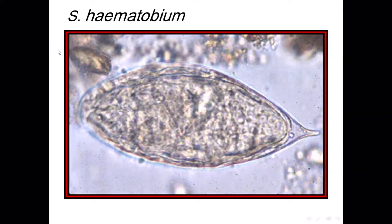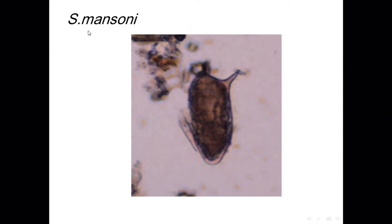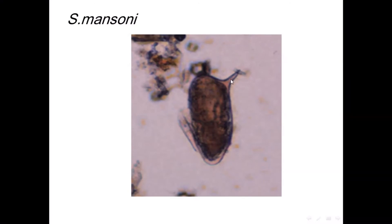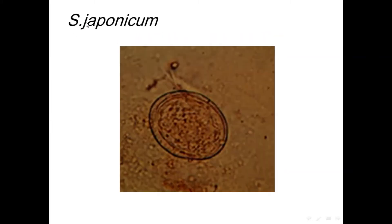إذا عملنا stool analysis — الـ Schistosoma haematobium بتسبب urinary schistosomiasis؛ في الـ urinary sample إذا شوفنا this egg have terminal spine، فبنعرف إنها for Schistosoma haematobium. بالنسبة لـ Schistosoma mansoni، this egg اللي بميزها have a lateral spine. بالنسبة لـ Schistosoma japonica، this egg ما عندها الـ spine الواضح — ممكن يكون عندها small spine أو بنسميها nub or hyaline nub.